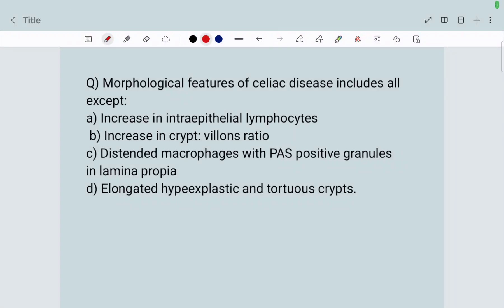Hi guys, let's start with the question of the day. The question goes like, Morphological features of celiac disease includes all except: A. Increase in intraepithelial lymphocytes, B. Increase in crypt to villi ratio, C. Distended macrophages with PAS positive granules in lamina propria, D. Elongated hyperplastic and tortuous crypts.